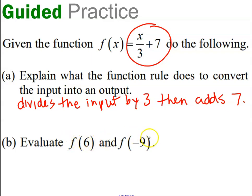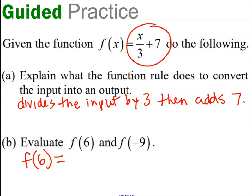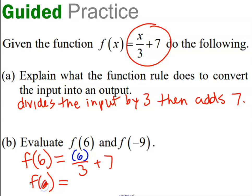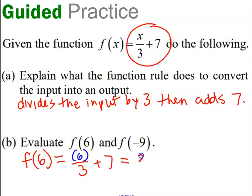Now it's asking us to apply that function. Take that function and input a 6. So that means 6 divided by 3, then add 7. If I go to function f and input a 6, instead of the letter x I'm going to put in a 6 and follow the rule: divide it by 3 and add 7. The answer is f of 6 equals 9. 6 divided by 3 is 2, and 2 plus 7 is 9. You could write your steps on separate lines or extend the computation on one horizontal line.